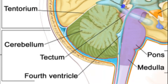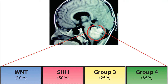There are four different molecular groups: WNT, SHH, Group 3, and Group 4, the most common being Group 4. They are due to different mutations and are more prevalent in different sexes, but we won't get into that.